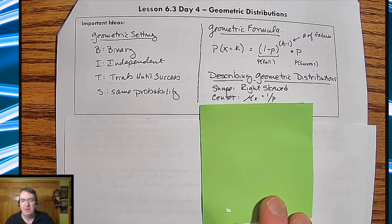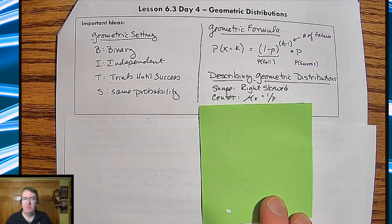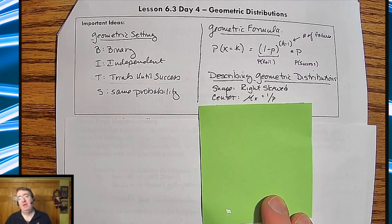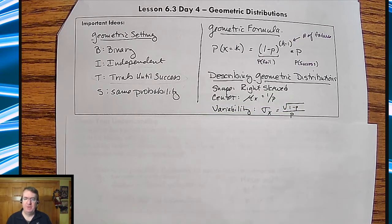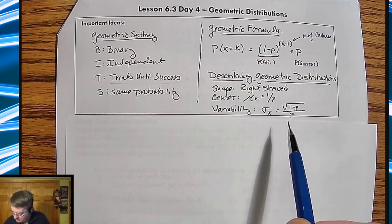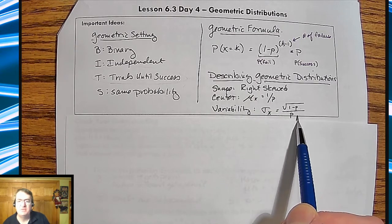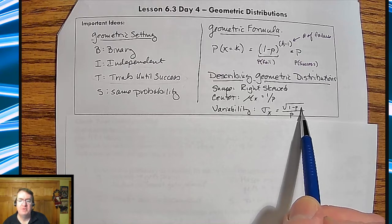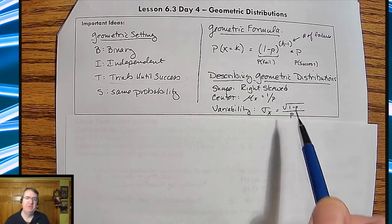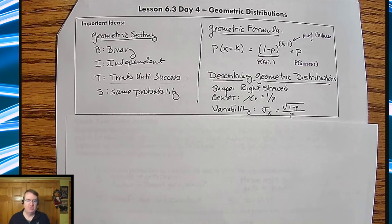The center is always going to be, the mean is going to be one divided by P. What ends up happening is that will basically tell you, kind of like one out of five, 20% is one out of five. If I go one divided by 20%, that's going to get me to that five. For the variability, your standard deviation turns out to be the square root of the failure divided by the probability of success, and that will give you your standard deviation.